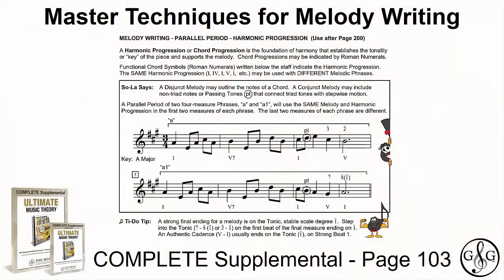Master techniques for melody writing. In the Complete Supplemental Workbook on page 103, at the top of the page, you will see melody writing, parallel period, harmonic progression — use after page 200. A harmonic progression or chord progression is the foundation of harmony that establishes the tonality of the piece and supports the melody. Chord progressions may be indicated by Roman numerals called functional chord symbols, usually written below the staff.